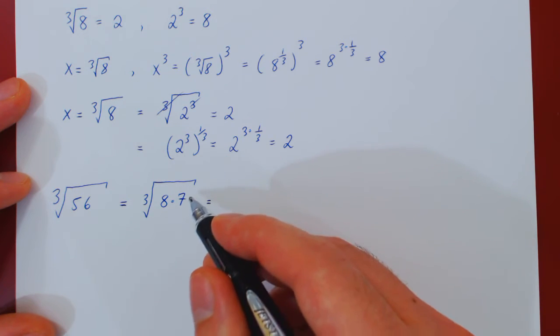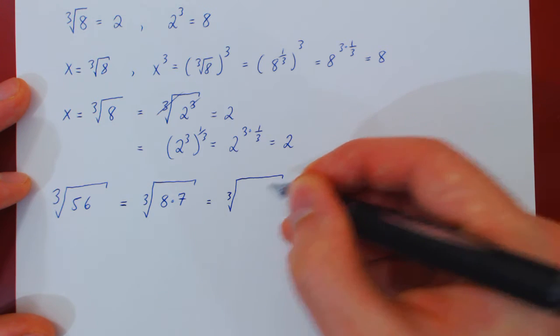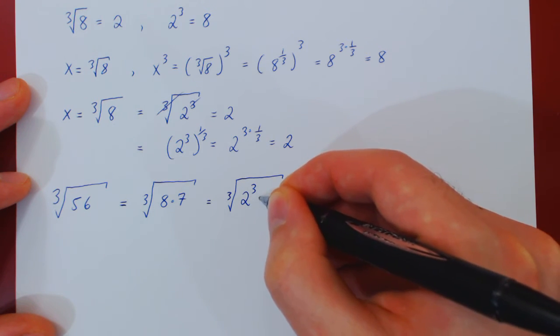56 is 8 times 7. 7 is not a perfect cube, but 8 is. So we have the cube root of 8 times 7, but 8 is 2 cubed, times 7.